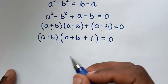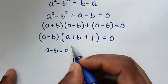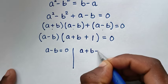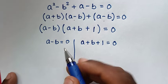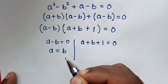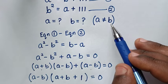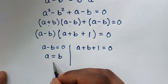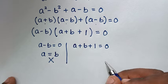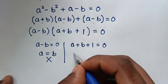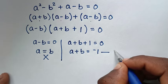From here, a minus b is common, so we take (a-b) out as a factor: (a-b)(a+b+1) is equal to 0. This gives two solutions: the first is a minus b equals 0, and the second is a plus b plus 1 equals 0. From the first solution, a equals b, but since the condition states a is not equal to b, we reject this solution. We continue with the second solution, giving us a plus b equals negative 1, which we call equation 3.